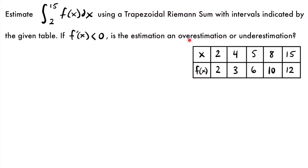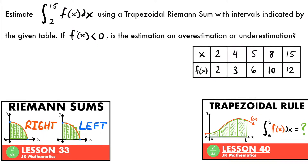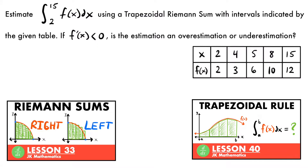We will look at this second question after we finish estimating this definite integral. For now, we're going to focus on this table and how we're going to use it along with a trapezoidal Riemann sum to approximate this definite integral. If you're not familiar with Riemann sums or using trapezoids to find the area under a curve, I have some videos on those topics that you can watch.